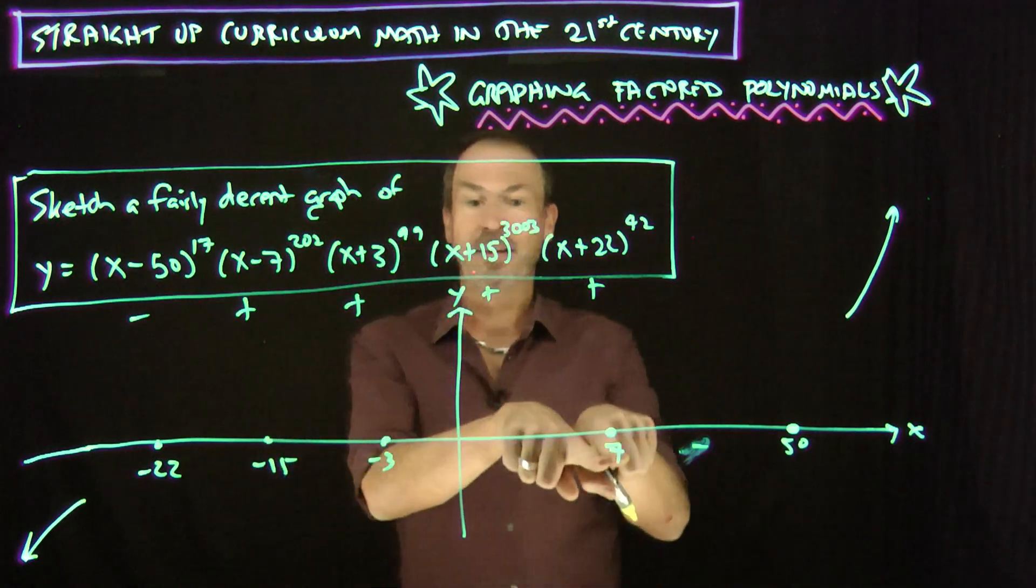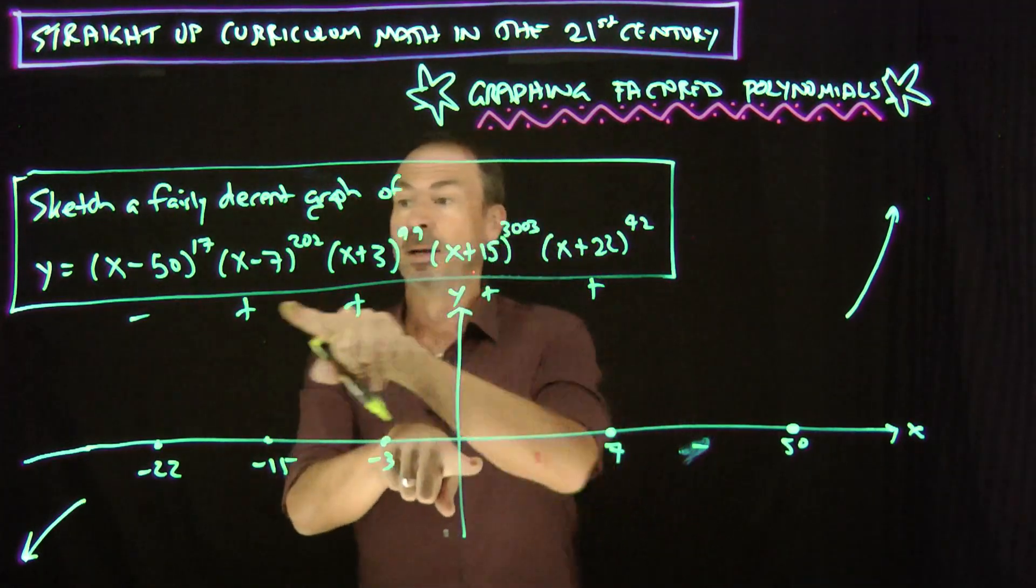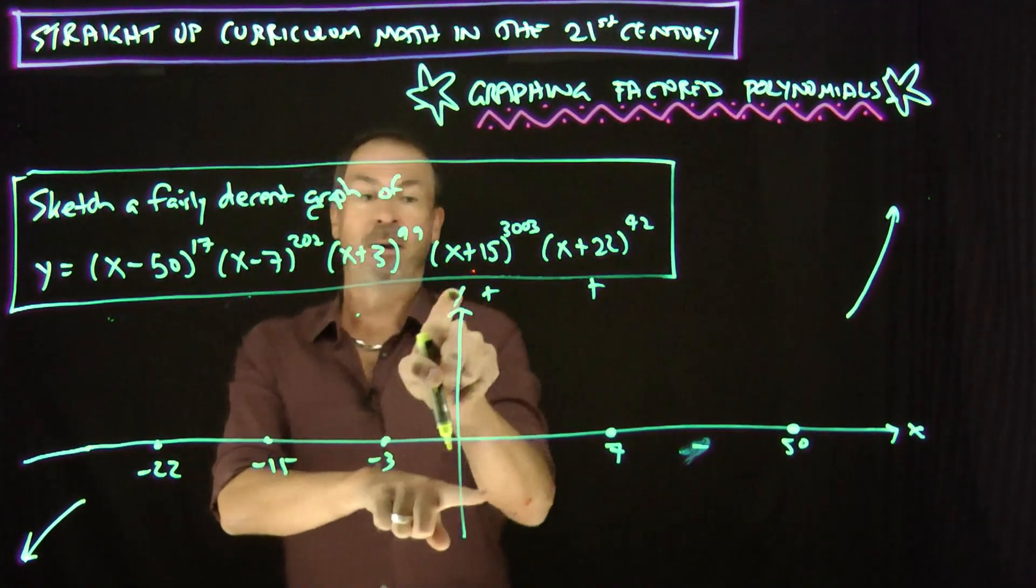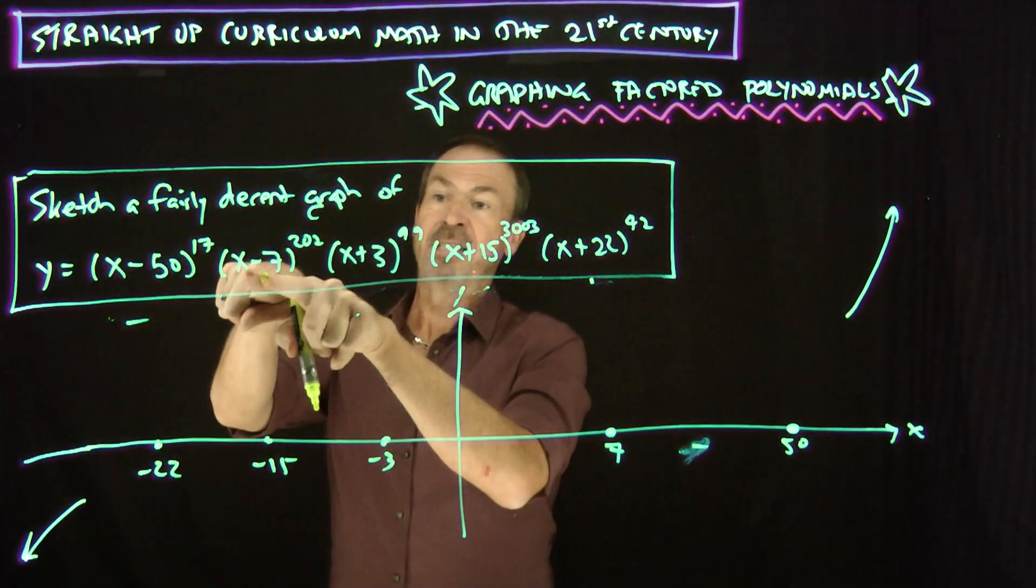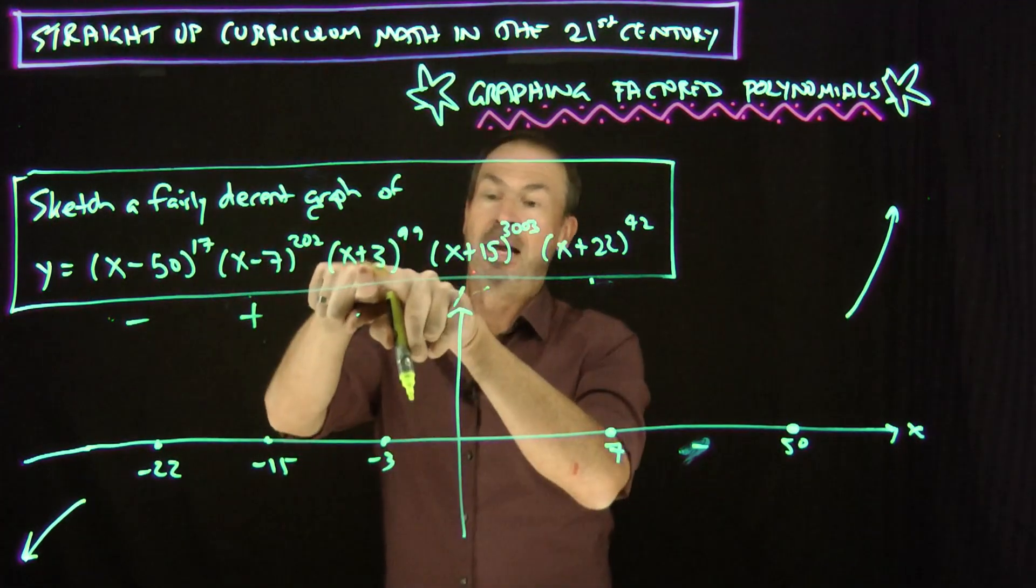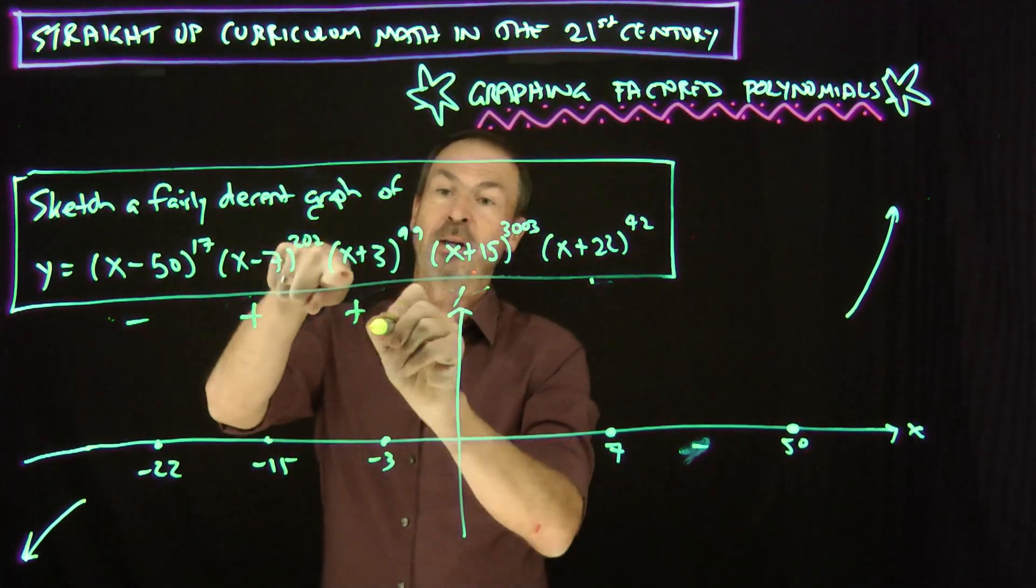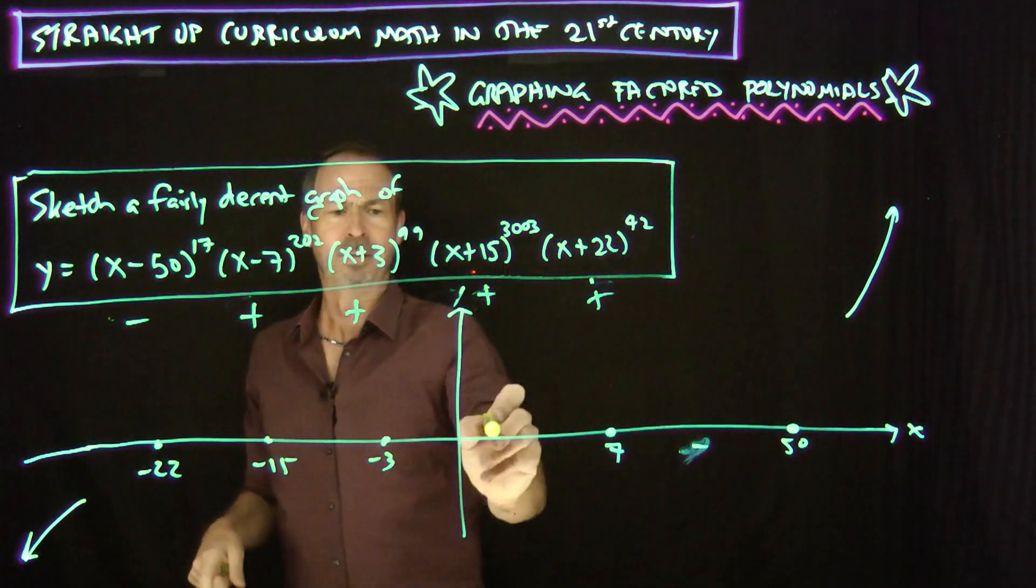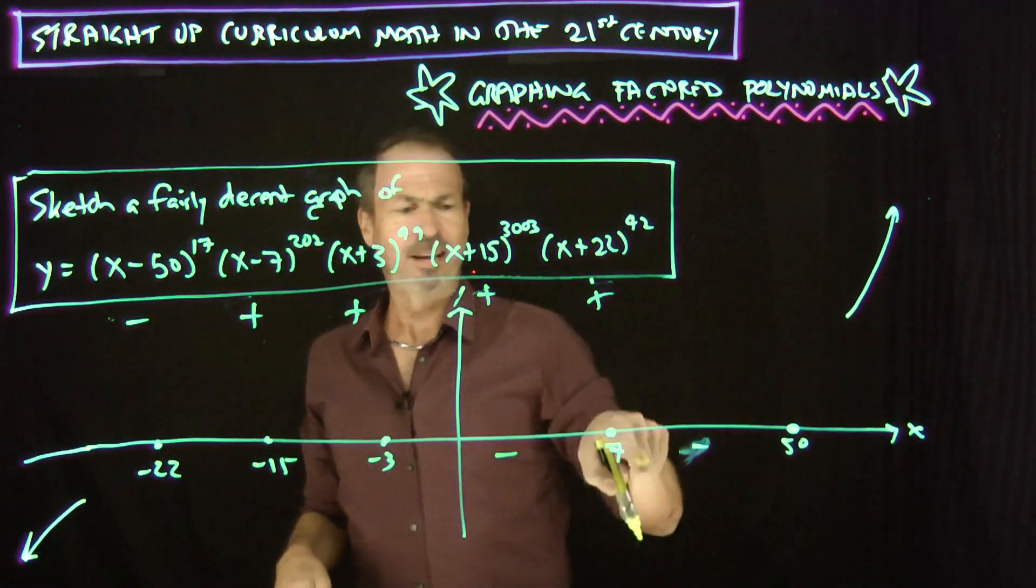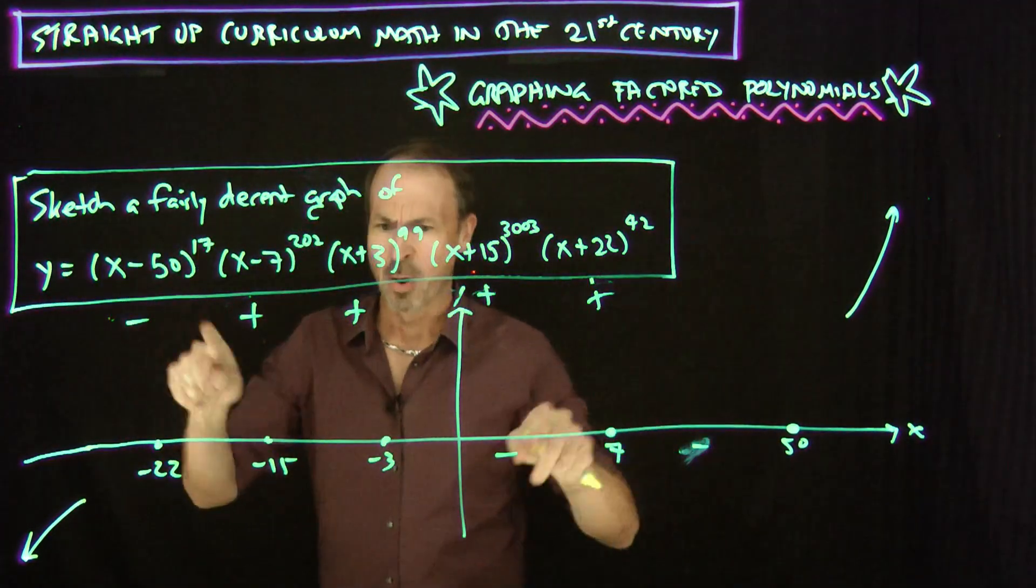What about between negative 3 and 7? If I do like say, well, I'll put in zero. In this case, if I put in zero, I can see I will have negative 50 to the odd power, negative. Negative 7 to an even power, positive. 3 to any power is positive. 15 to any power, any power, the whole thing is negative again. So it's negative here and it's negative here. Oh, I'm glad I'm doing this. Okay, let's keep going.